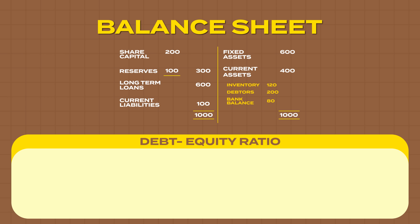Then there is a ratio called debt equity ratio. Always remember: in the debt equity ratio, debt is in the numerator. The debt of this company is 600 and equity is 300, so the debt to equity ratio is 2 is to 1. Banks have norms — small scale units are eligible for a maximum debt equity ratio of 3 is to 1, meaning if owners invest 1, the bank will lend up to 3. Medium scale companies are eligible for 2 is to 1. Large scale companies, 1 is to 1.